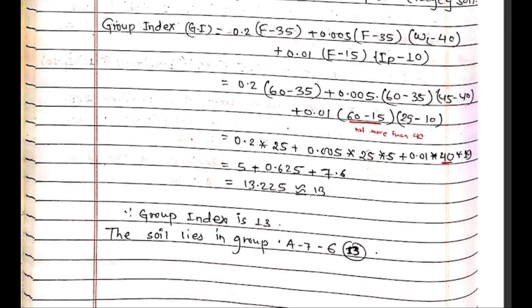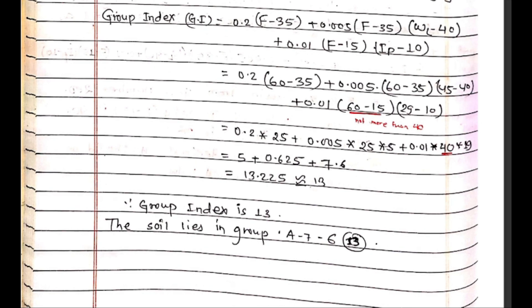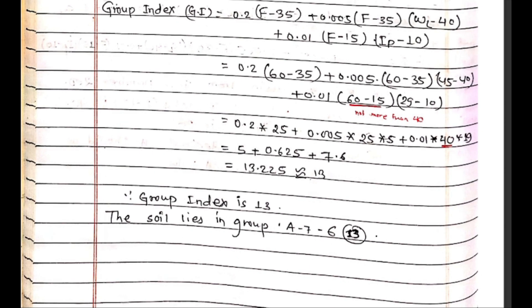Continuing the calculation: 0.2 times 25 plus 0.05 times 25 times 5 plus 0.01 times the values... This equals 5 plus 0.625 plus 7.6, which equals 13.25. So the group index is approximately 13.